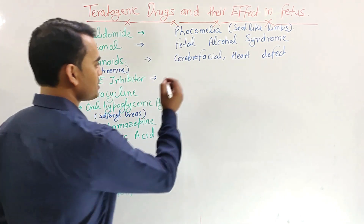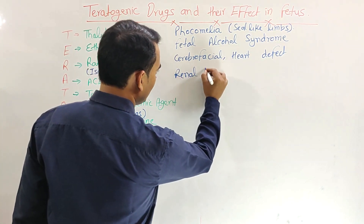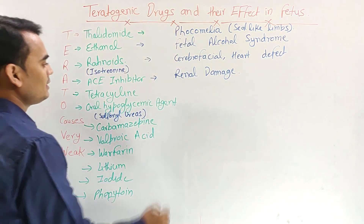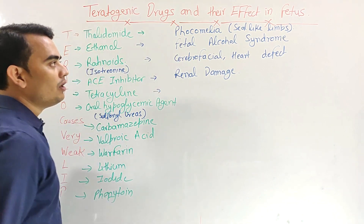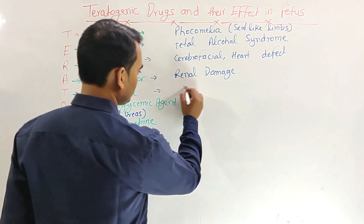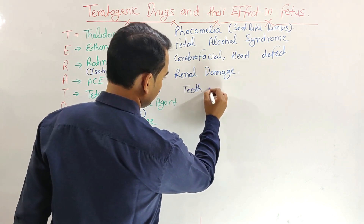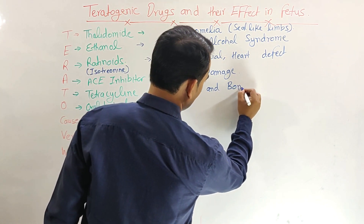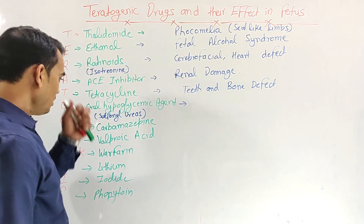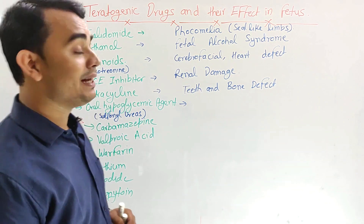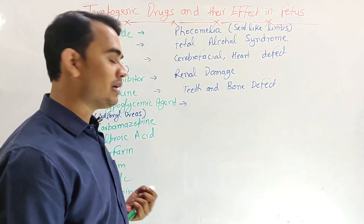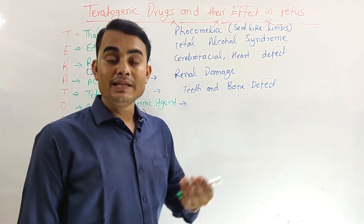Next, ACE inhibitors — including Captopril, Lisinopril, and Enalapril — all cause renal damage in the fetus. Next, Tetracycline has well-known teratogenic action causing teeth and bone defects in the developing fetus.